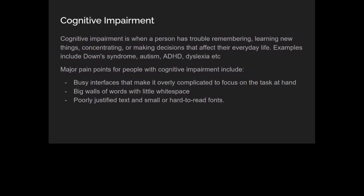Moving on, we have cognitive impairments — people who are not able to concentrate on things, not able to learn things easily, or have trouble making decisions. It could be caused by autism, ADHD, dyslexia, and more. Major pain points include too much text, cluttered text, and text that's not properly justified — just a website where things are messy and they can't concentrate on one thing at a time. Make sure you don't have too many things on your page, separate content into sections, arrange it as much as you can, and make sure text is properly justified.